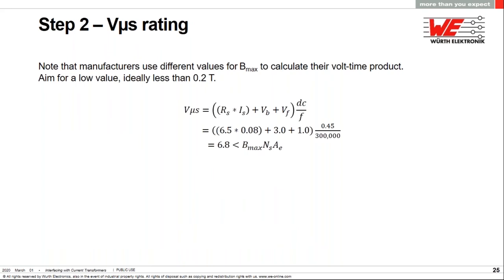Knowing that I want 125 turns secondary, we now need to determine the maximum volt microseconds that will be needed so we can select a part that has more. Since the turns ratio is fixed, different volt seconds will come from different sizes of transformers. The volt microseconds from the application side is comprised of three voltage drops. The current through the winding resistance, the burden voltage, which is the largest portion, and the voltage drop of the diode. We multiply the sum of these by the duty cycle divided by the frequency, which is on time. The volt microseconds from the component side is the maximum flux density times the turns times the core area. It's important to know that different manufacturers use different values for Bmax, so double check the datasheet. Ideally, you want to use something like 0.2 Tesla, but as you'll see in the next step, the accuracy that you want may make this choice less critical.